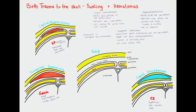We will start with caput succedaneum. Caput succedaneum is a process where there can be edema and swelling on the scalp of the newborn, and it usually occurs after some pressure from the birth canal during the birth process. This swelling happens between the skin and the periosteum — so on top of the periosteum, between the periosteum and the skin. It is the most superficial swelling out of all the ones we're going to talk about, and unlike the next two, there is edema in caput succedaneum, not pooled blood.